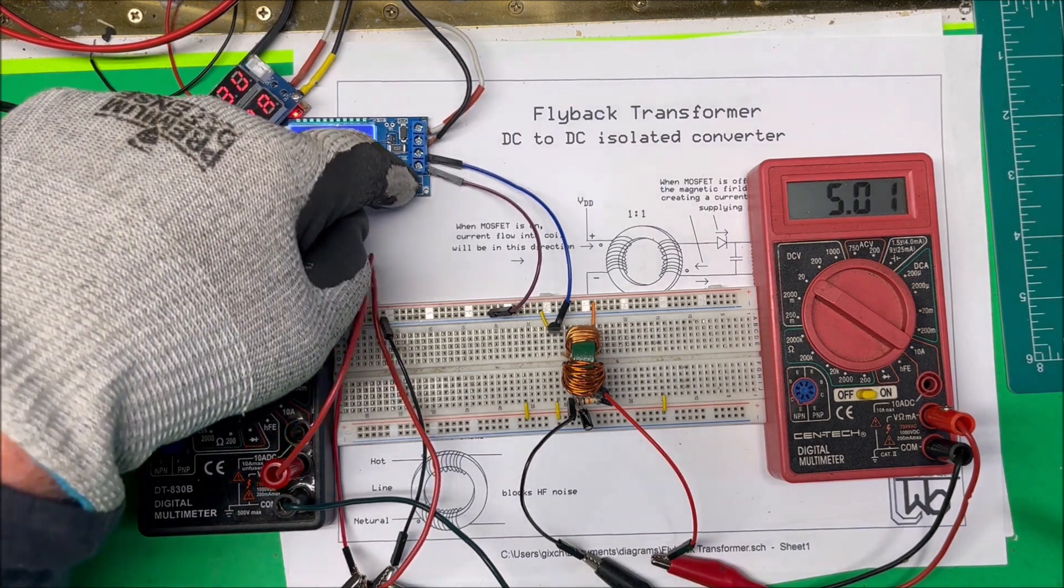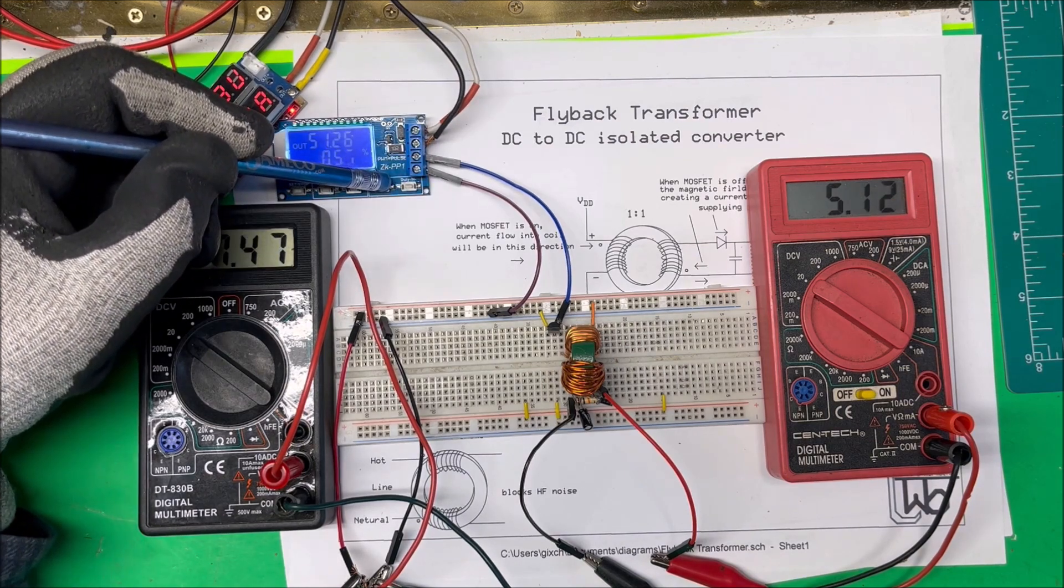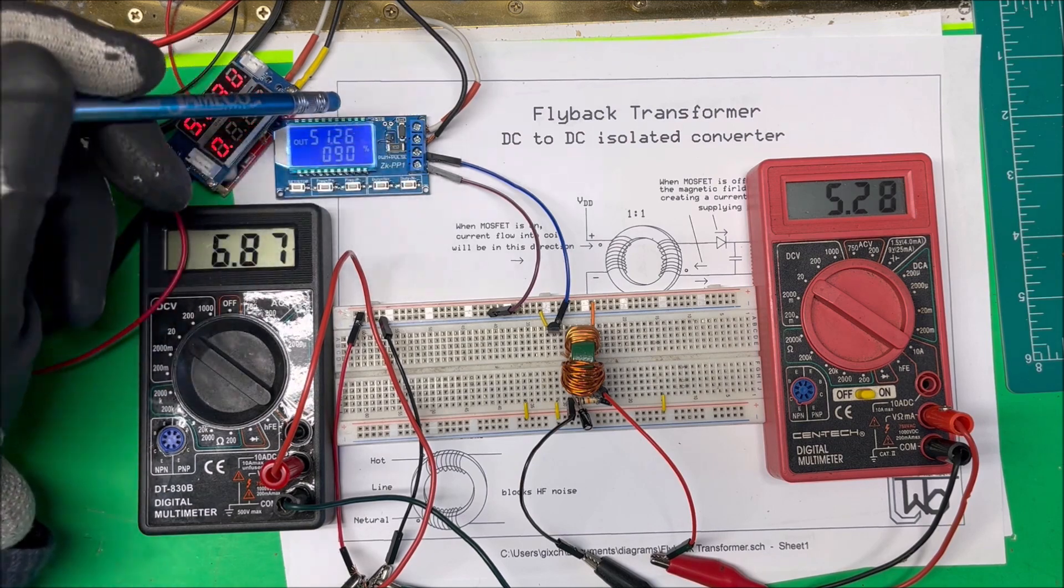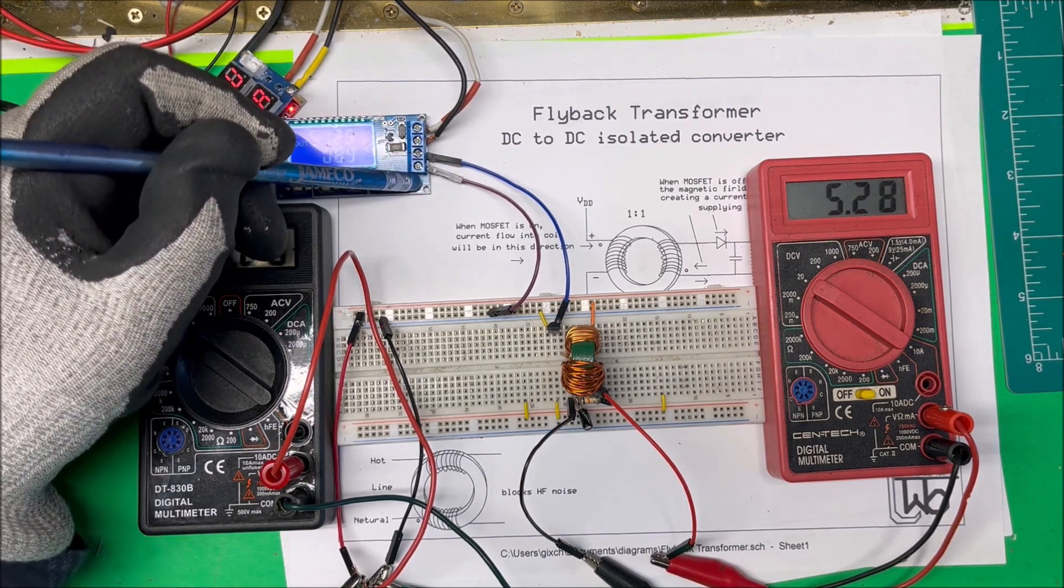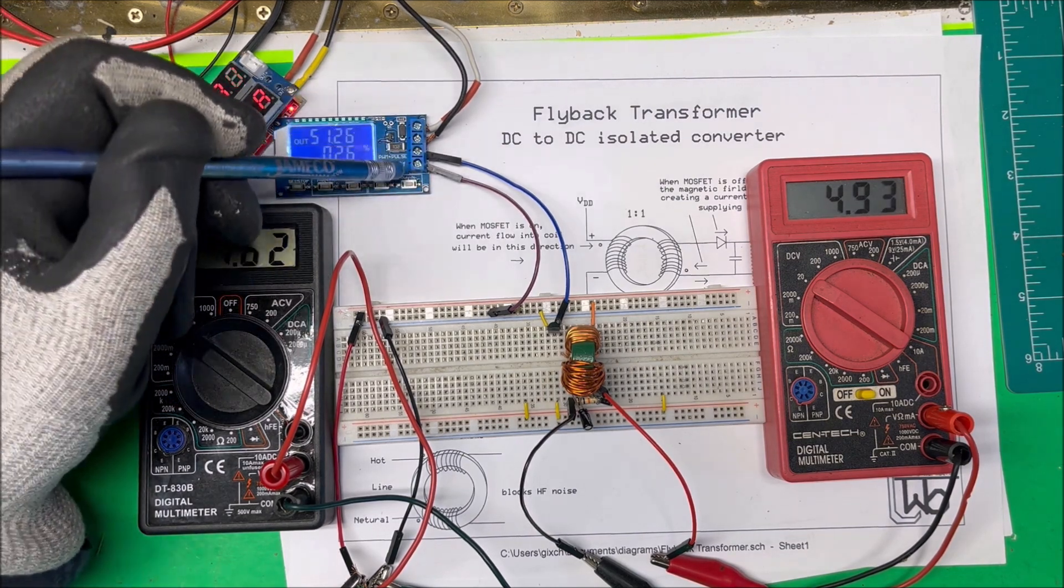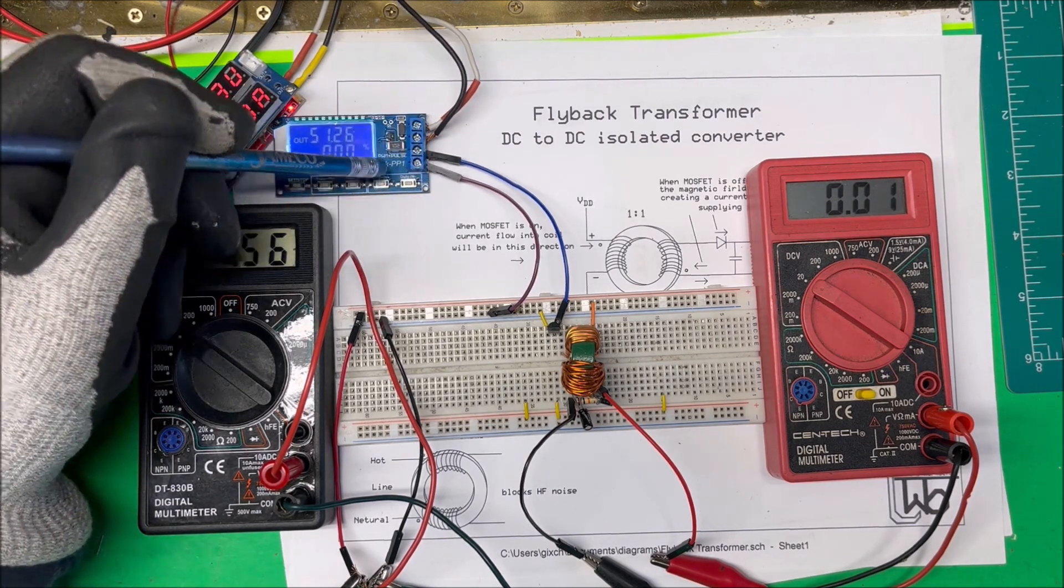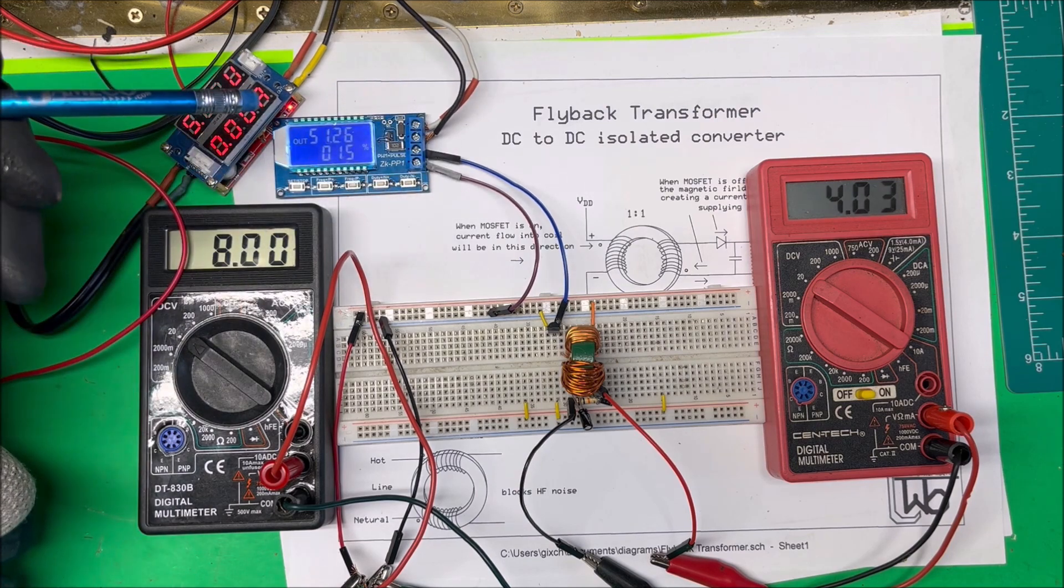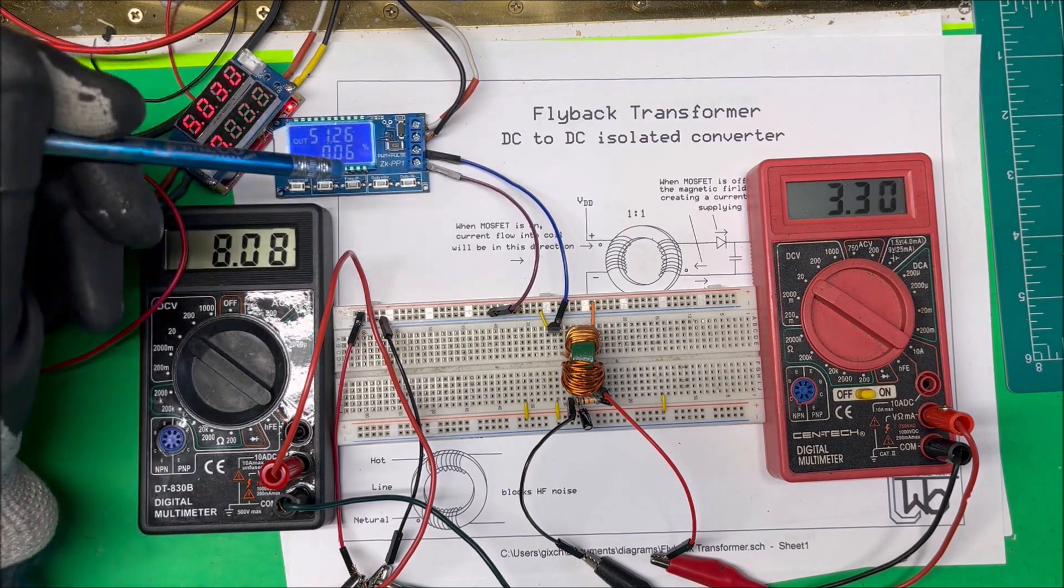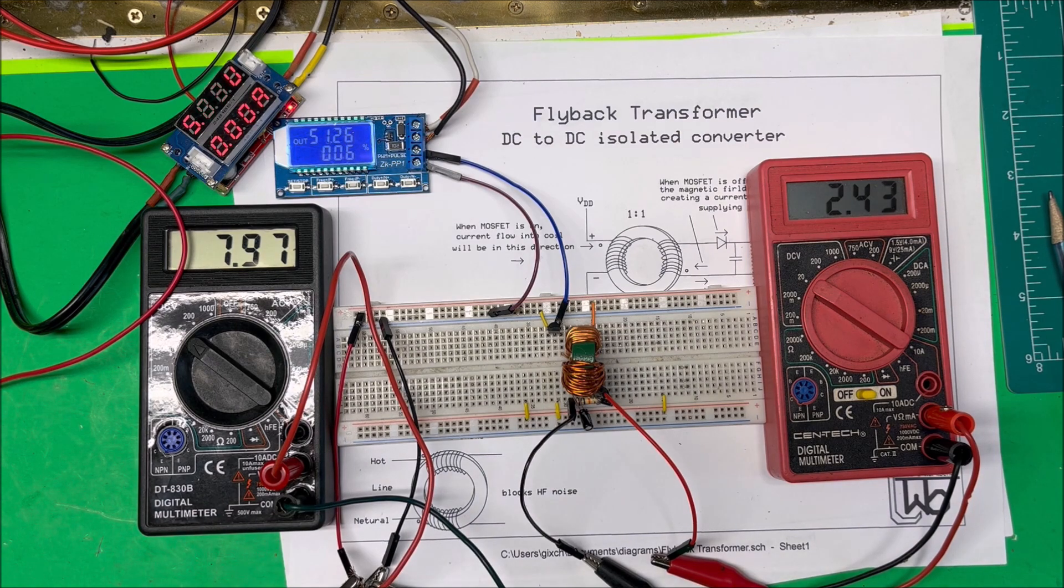Now I can adjust that with the pulse width modulation. I can change... there we go. I have it at 90 percent now and it's at 5.28, and then I turn it down to 26 percent. At zero I got zero, and at 15 percent I have 4.8 volts. So you can adjust the voltage with the pulse rate going in. Now I have it at 2.4 volts.